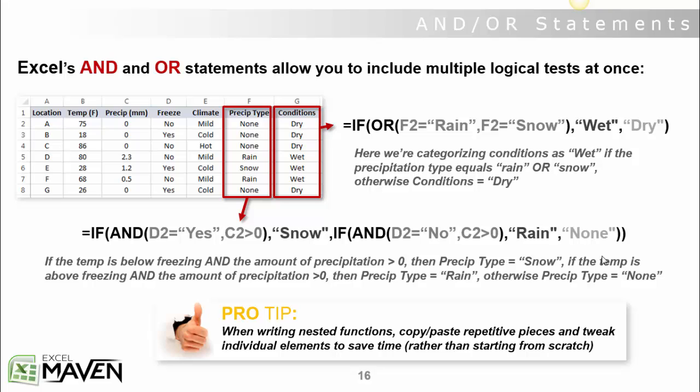It's a function of two things, the temperature and the amount of precipitation. So if nothing's falling out of the sky, precipitation type will always be none. If precipitation is greater than zero, meaning something is coming out of the sky, we need to know if the temperature is above or below freezing to understand whether that is rain or snow. That's where the AND and OR statements come into play. It's when you need to include multiple logical tests that are based on a number of different criteria or variables.